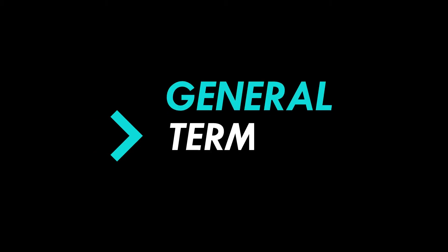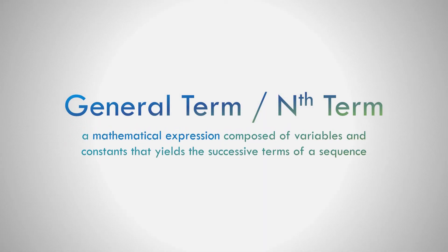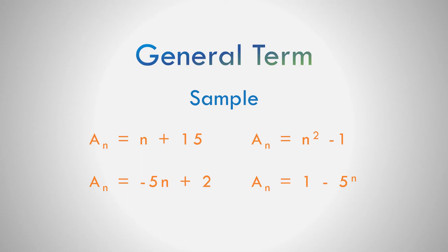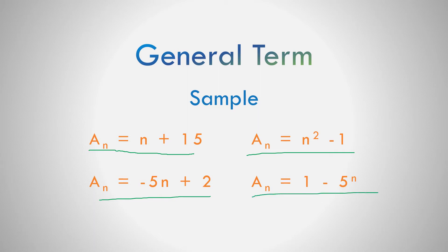Let us now discuss the general term of the sequence. The general term, or nth term of the sequence, is a mathematical expression composed of variables and constants that yields the successive terms of a sequence. Examples: a sub n equals n plus 15; a sub n equals negative 5n plus 2; a sub n equals n squared minus 1; a sub n equals 1 minus 5 to the n.